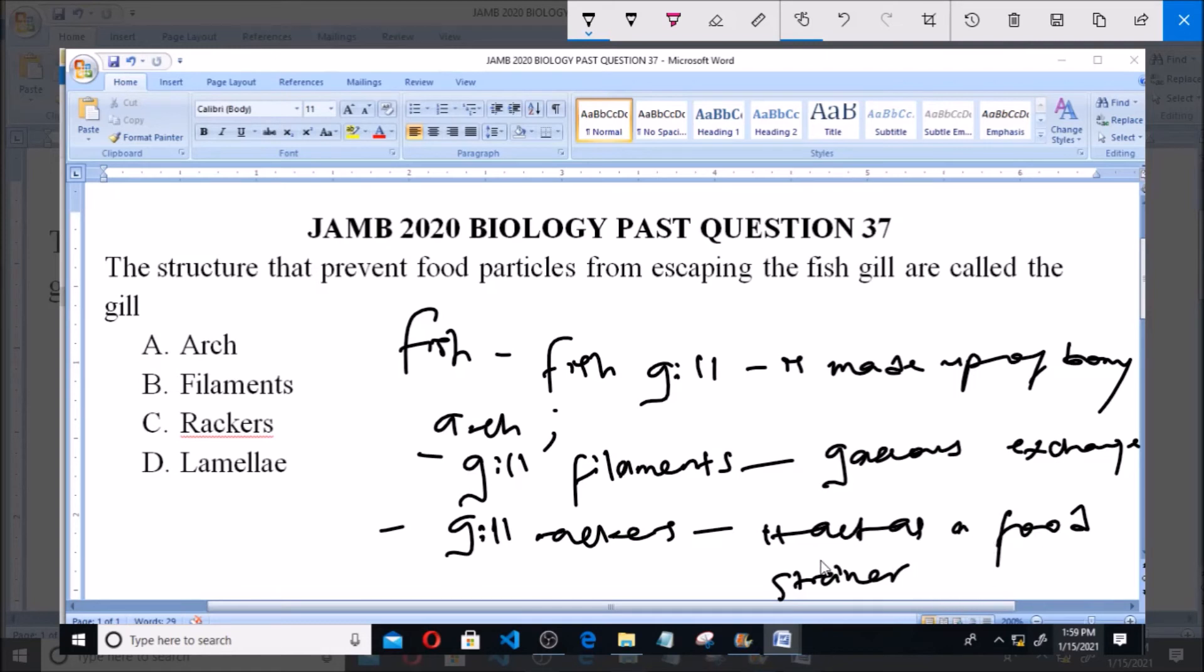of the gill. So gill rakers is responsible for preventing food particles from escaping from the fish gill. The answer to this question is option C: gill rakers. The filament is responsible for gaseous exchange